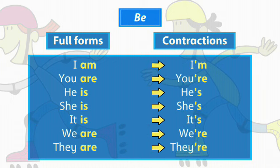The apostrophe in the contractions replaces a missing letter. For example, in 'I'm', the apostrophe replaces the 'a' in 'am'.